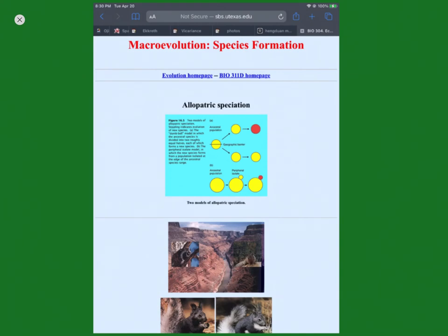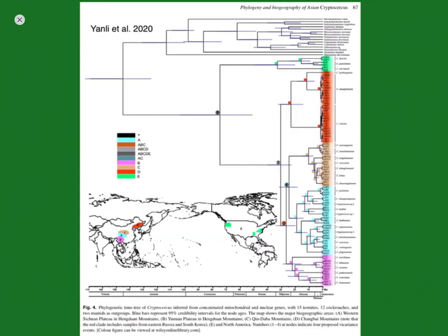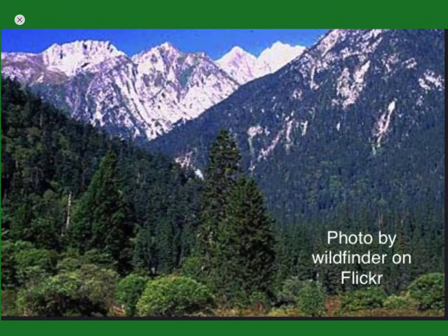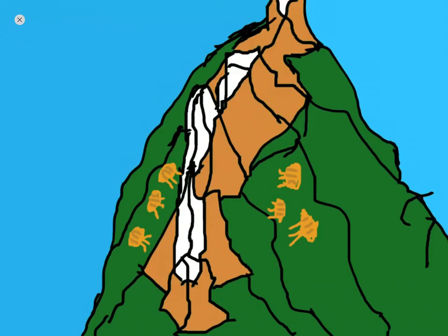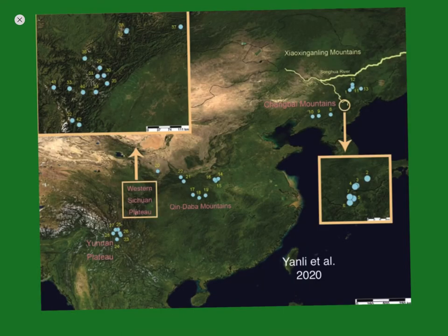This example is brought to you via the University of Texas' webpage, Macroevolution Species Formation. The last example of geological barriers is a clade of Cryptocercus wingless cockroaches living in the Hengduan Mountains. There are three major clades of cockroaches living there, and they diverge from the northern cockroaches in the Oligocene. They live in forests in the wood of dead trees, and they have a common ancestor that was distributed throughout southeastern China. In the Miocene, the Hengduan Mountains formed in the lands where they lived. The mountains had many high ridges where the forests could not grow. Therefore, the populations of cockroaches were fragmented into many pieces, and individuals from different populations could not meet and mate, leading to the formation of many different species. This example comes from Yanli et al.'s 2020 research article, Uplift-Driven Diversification Revealed by the Historical Biogeography of the Cockroach Cryptocercus Scudder, Blattodea Cryptocercidae, in Eastern Asia.